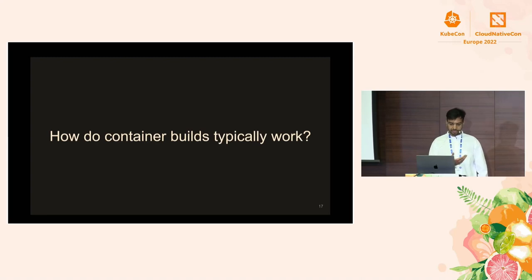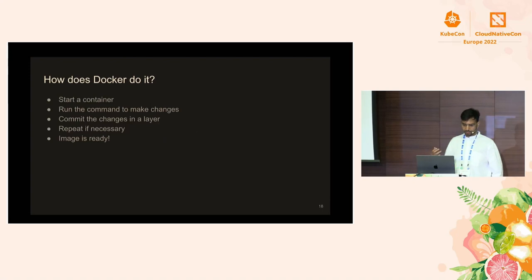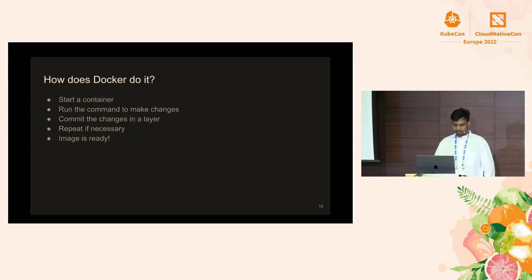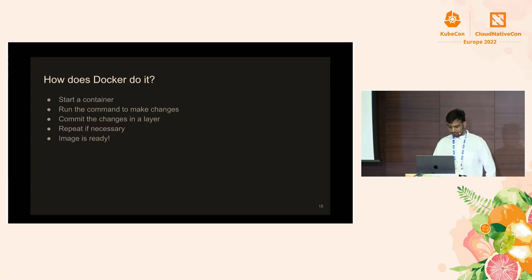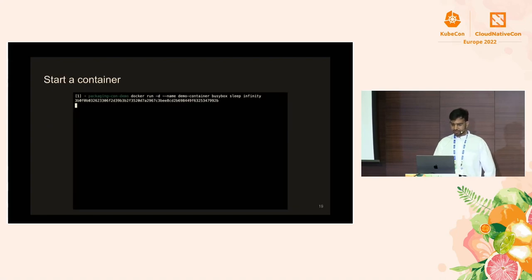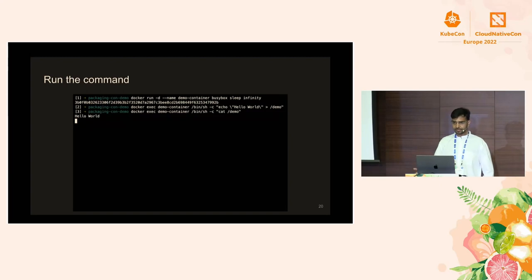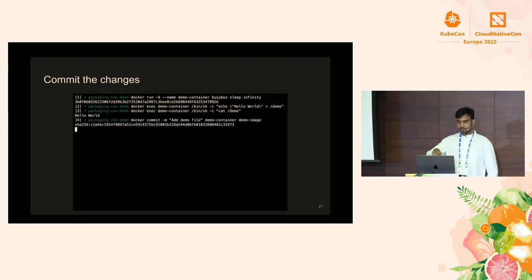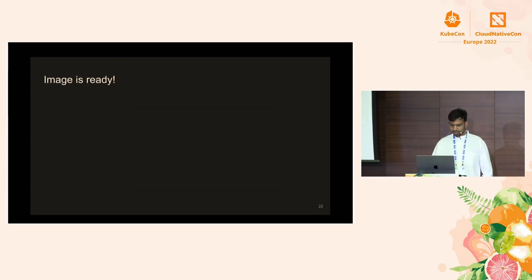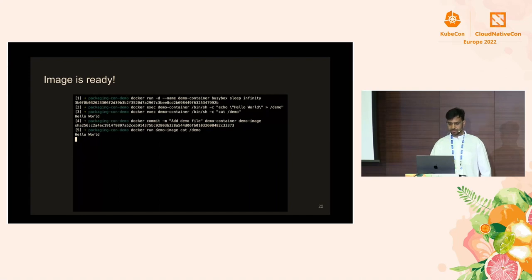Now that we know what layer and config objects are, let's take a deeper dive into how Docker actually uses them and how Docker build works. Before that, I want to talk about a more primitive Docker command: Docker commit. Docker commit allows us to take a running container and create a container image out of the state of that container. Let's start with a simple BusyBox image, make some file system changes, and then use Docker commit to convert the container state into an image.